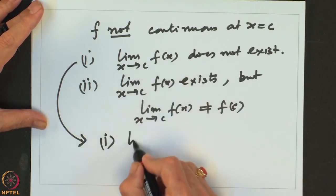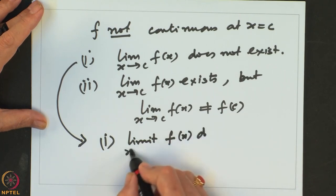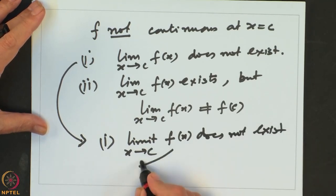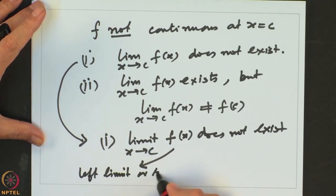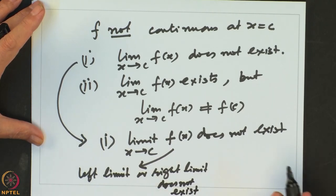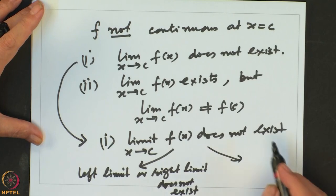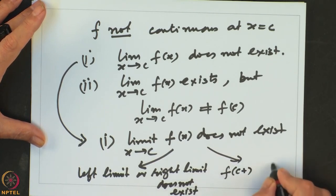There are two possibilities for when the limit does not exist. One is that the left limit or the right limit — or both — do not exist. If at least one of them does not exist, the overall limit cannot exist. The other possibility is that both the left limit and the right limit exist, but they are not equal. That also implies the overall limit does not exist.